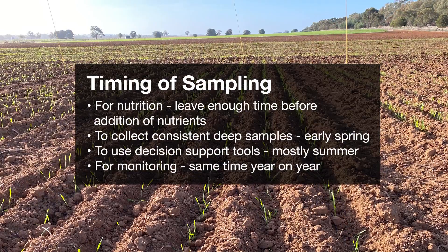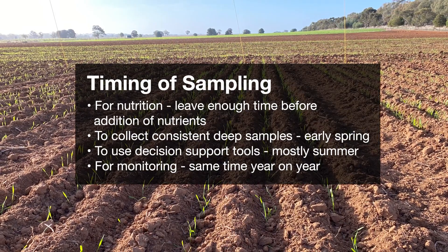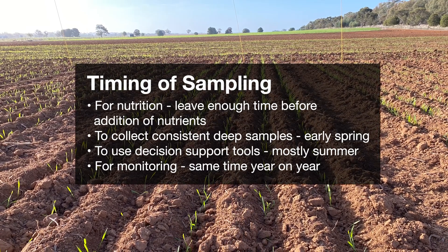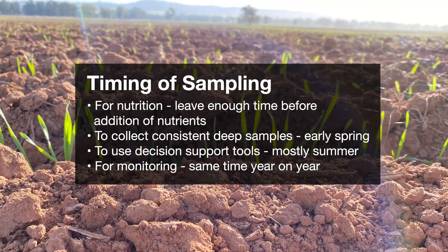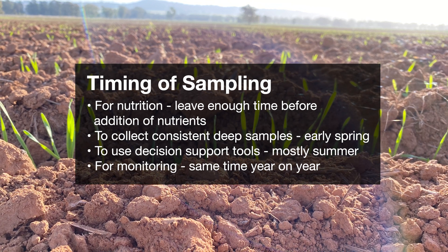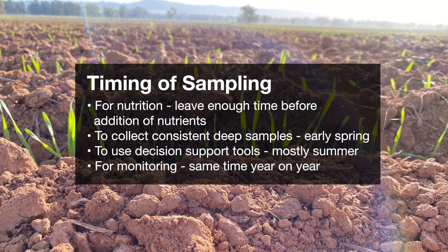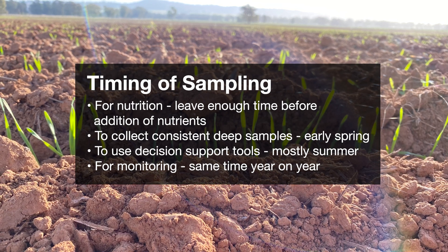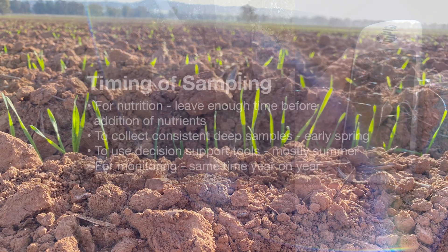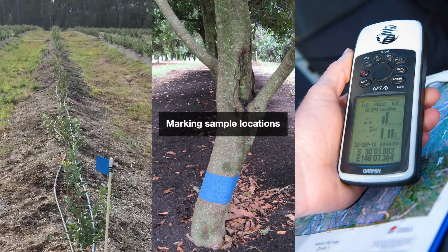The timing of sampling is important. If you are using the data for fertilizer decisions, make sure you carry out sampling so that your test results are back in time. Sampling in early spring when the soils are not too hard can result in more consistent sampling to depth. However, some fertilizer decision making tools are often calibrated to summer sampling when the soil is dry and residual nutrients have migrated into the labile pools. If you are monitoring and your schedule is annual, then it's important to sample at approximately the same time each year and always record sample locations so that you can return to the same areas.